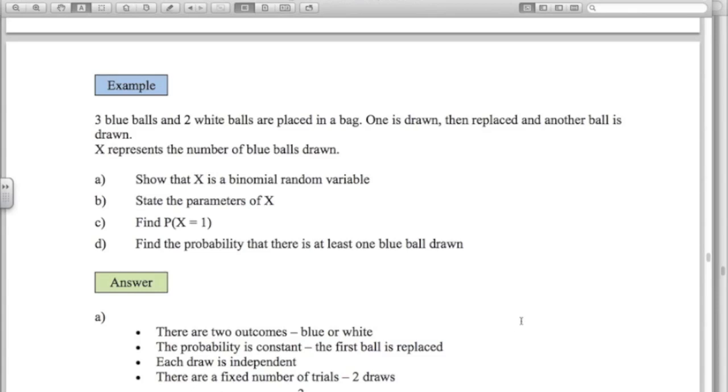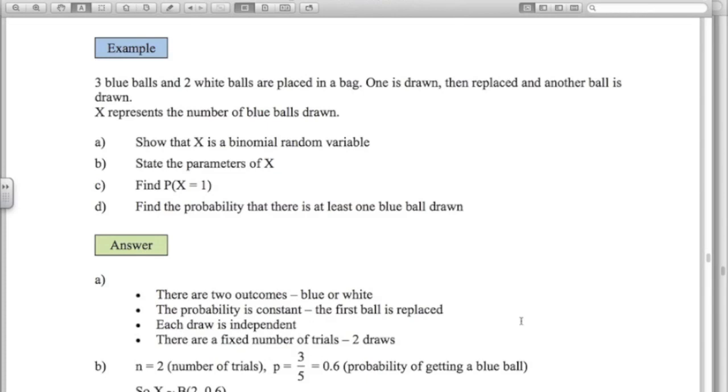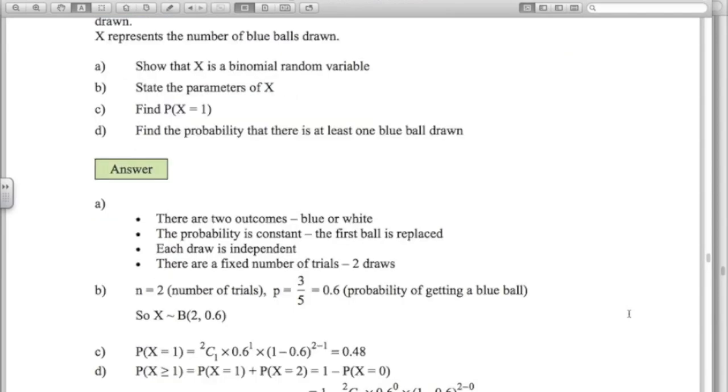So the parameters of X. N is 2. P is 3 fifths or 0.6. So we could write this. X has the binomial distribution. N equals 2. P equals 0.6. Probability X equals 1, using the formula, is 0.48.